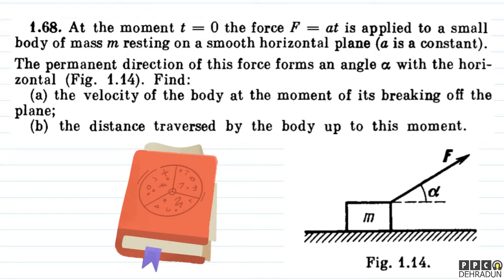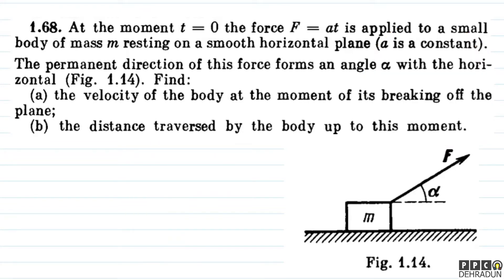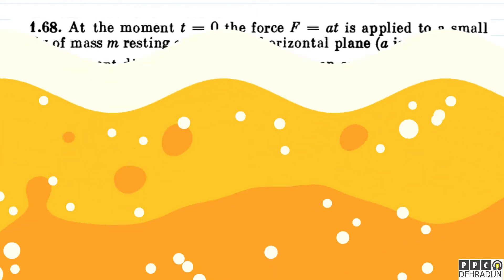The question says: at the moment t = 0, the force F = at is applied to a small body of mass m resting on a smooth horizontal plane, where a is a constant. The permanent direction of this force forms an angle alpha with the horizontal. Find: (a) the velocity of the body at the moment of its breaking off the plane, and (b) the distance traversed by the body up to this moment.